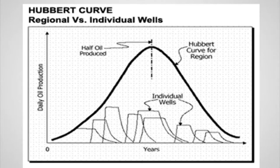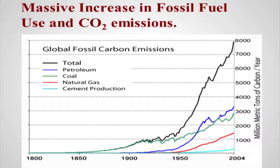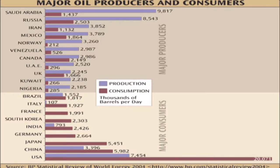Why is the peak so significant? Assuming it is a symmetrical curve, you have used half of the oil. It means that in future the production is going to decline. If production declines, prices are going to go higher, and it is time to start looking for new sources. This is the Hubbard curve for the world. The burning of oil or coal emits CO2, which we know.